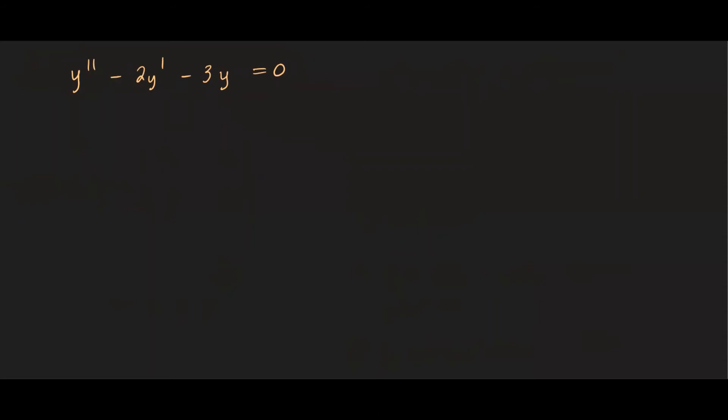Let's go ahead and find its solution. So we are going to go ahead and write down its characteristic polynomial, which would be r² - 2r - 3 = 0. And this can be factored into (r - 3)(r + 1). So we have r = 3 and -1.